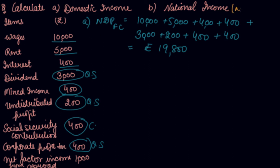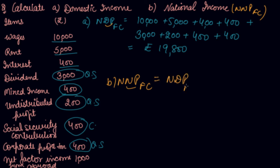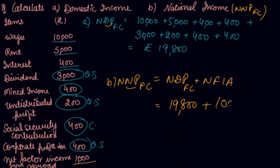Now we have to calculate national income, that is NNP at FC. We have NDP at FC, so we add net factor income from abroad: 19,800 plus 1,000 gives us Rs. 20,800 as your national income. I hope you liked our video. Please download our Scholars Learning App and enjoy the learning experience with us. Thank you.